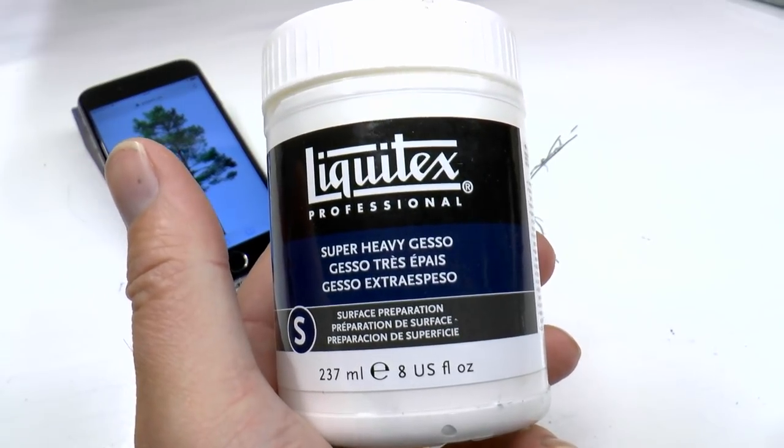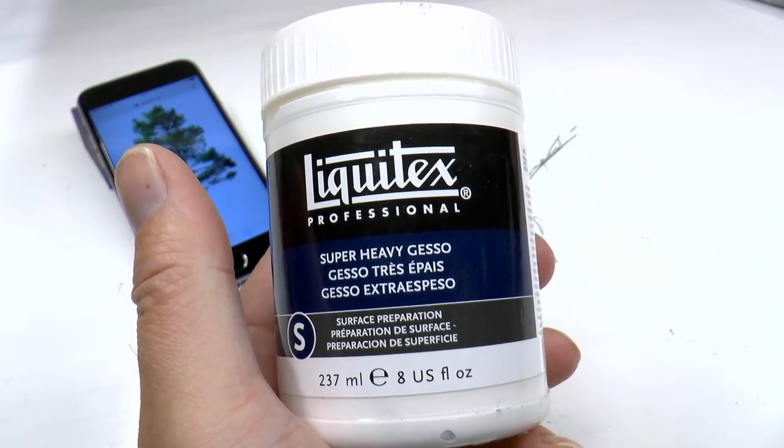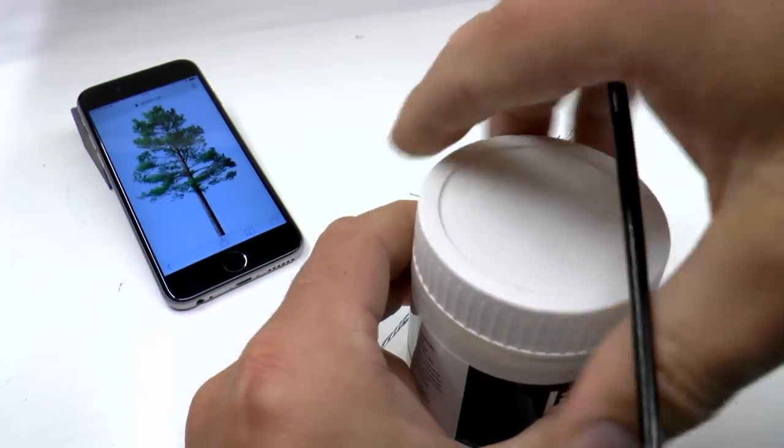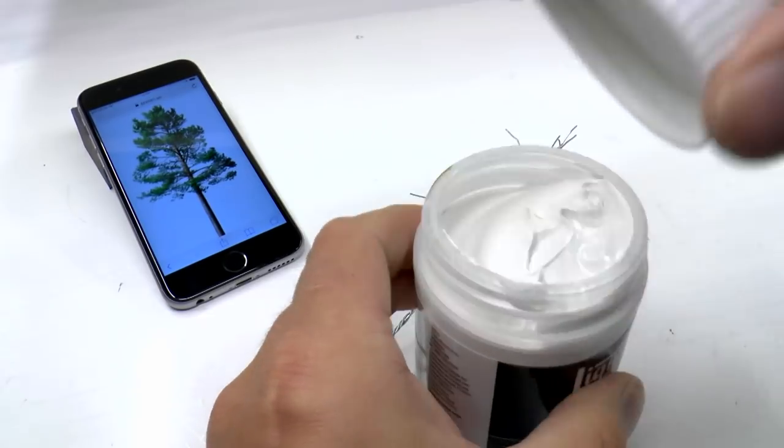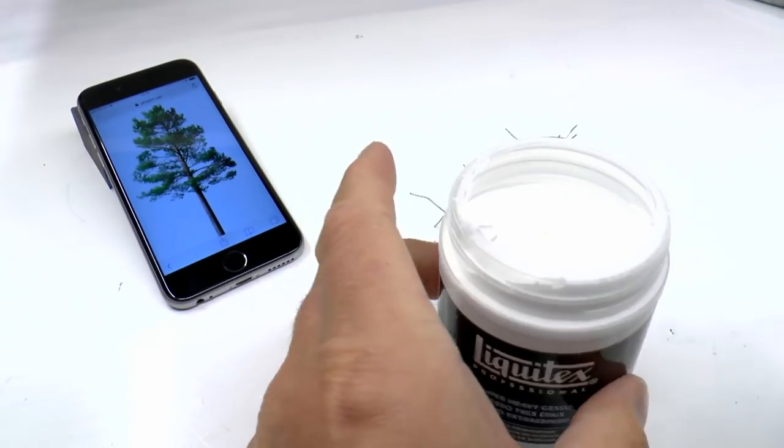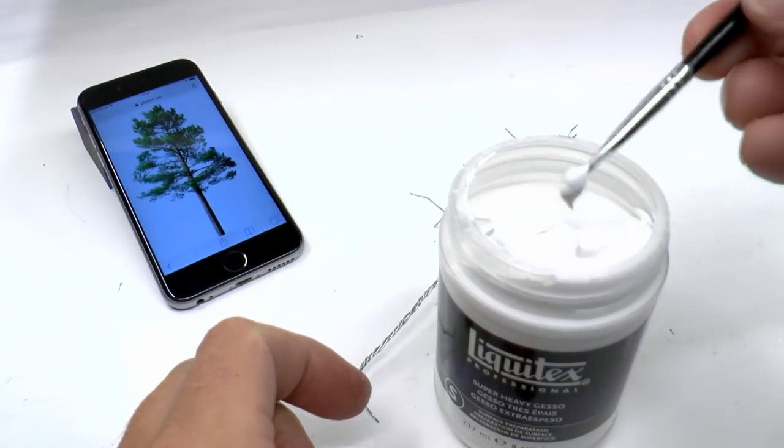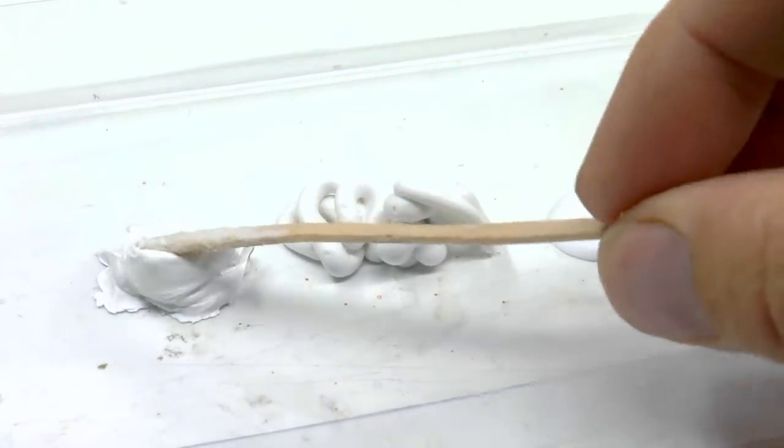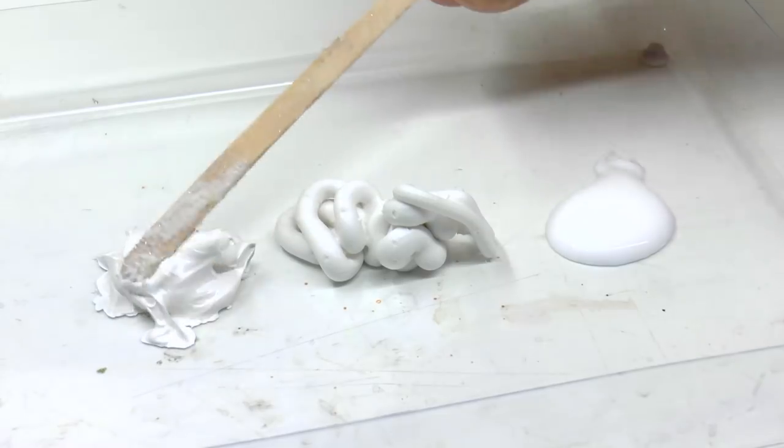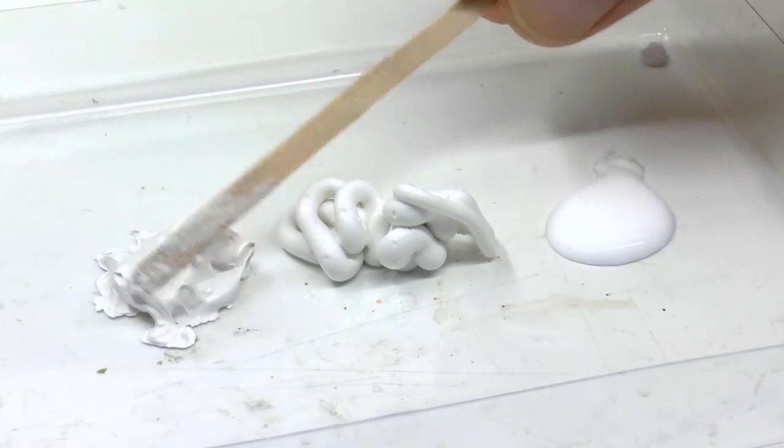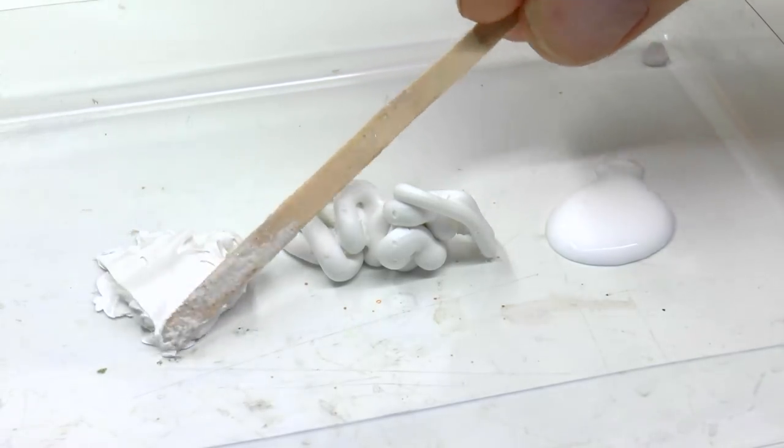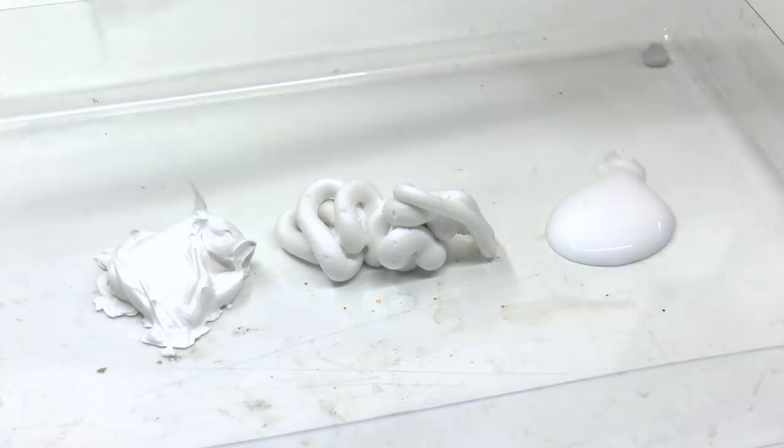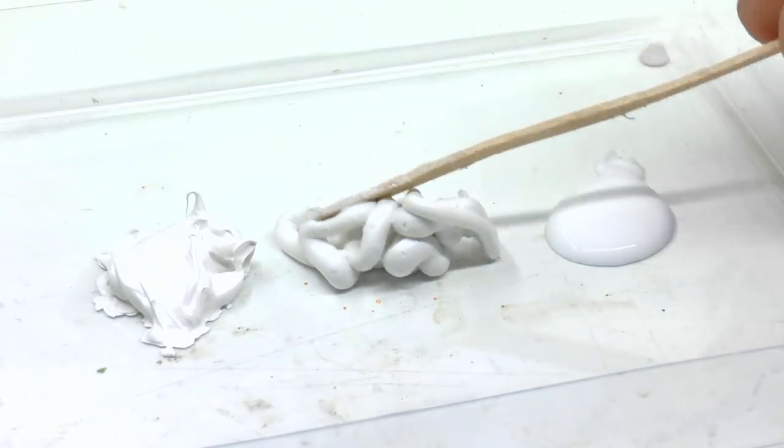All right, time to test these materials. So this is the super heavy gesso from Liquitex. Now the benefit to use the gesso would be that the tree only needs one covering and that should be a time saver. It was a kind of nice material to work with. It's possible to shape into any shape, it doesn't shrink or crack and the surface remains as you shape it.